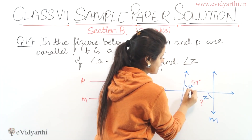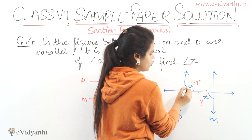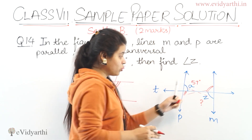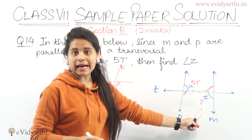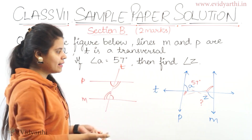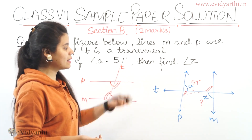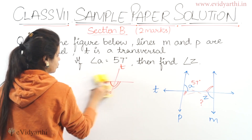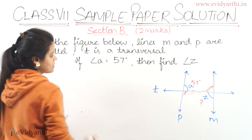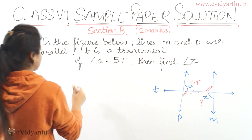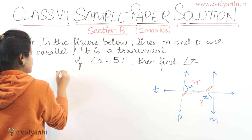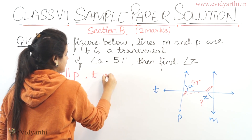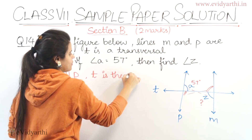If we look here, we will see these two angles. Angle A and angle Z are equal. So we know that angle A equals angle Z. Angle A is given, Z is to find. Angle A is equal to 57 degrees. We write: M is parallel to P and T is the transversal.